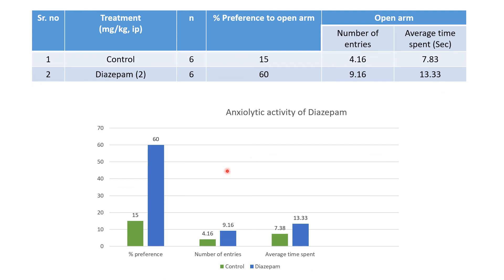When we plot the graph showing the anxiolytic activity of diazepam, the green color indicates the control group and blue indicates the diazepam-treated group. The percent preference increased from 15 to 60, number of entries increased from 4.16 to 9.16, and average time spent increased from 7.83 to 13.33 seconds.